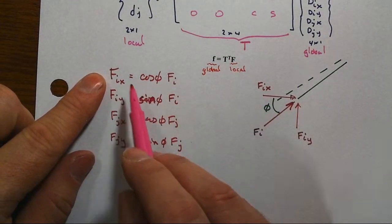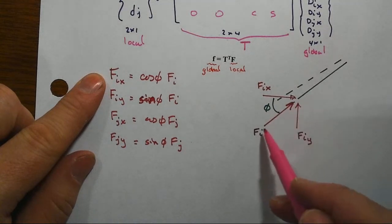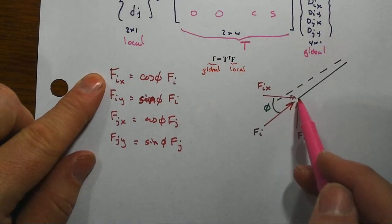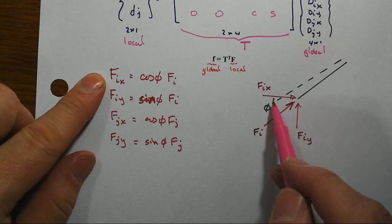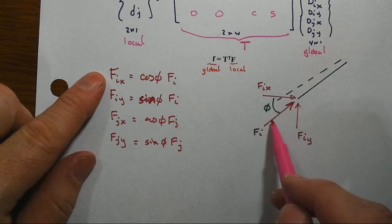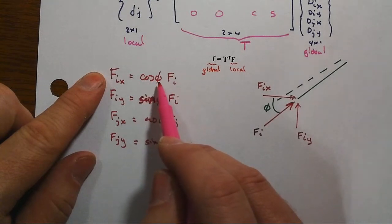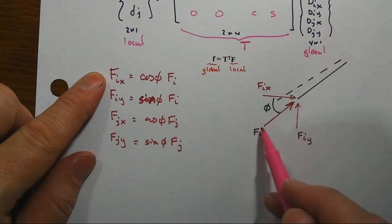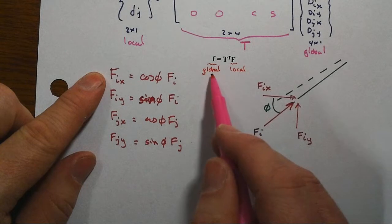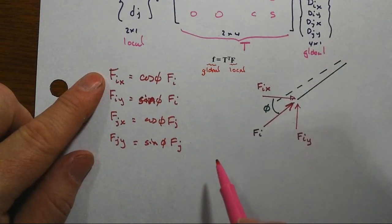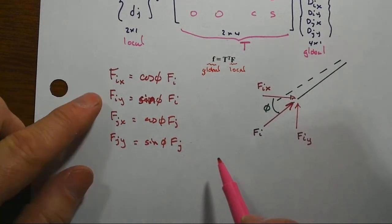So note what happens here. We're looking at the axial force at end I in the member and then simple statics relationships to take that and project it onto the global x and y axes. See that's the difference, right? We're now projecting the local onto the global instead of the other way around, which is what we were doing before with the displacements.